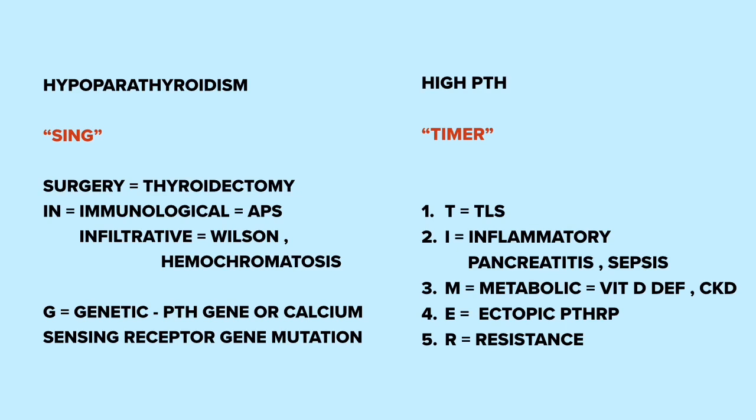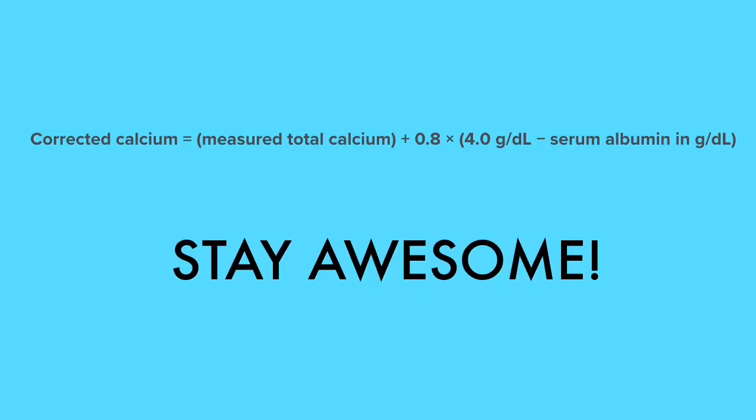TIMER covers conditions with high PTH level: T is tumor lysis syndrome; I means inflammatory conditions like pancreatitis and sepsis; M means metabolic conditions like vitamin D deficiency and chronic kidney disease; E means ectopic parathyroid hormone-related protein secretion; and R means PTH resistance. If you like this algorithm, please like, share, and subscribe, and stay awesome.